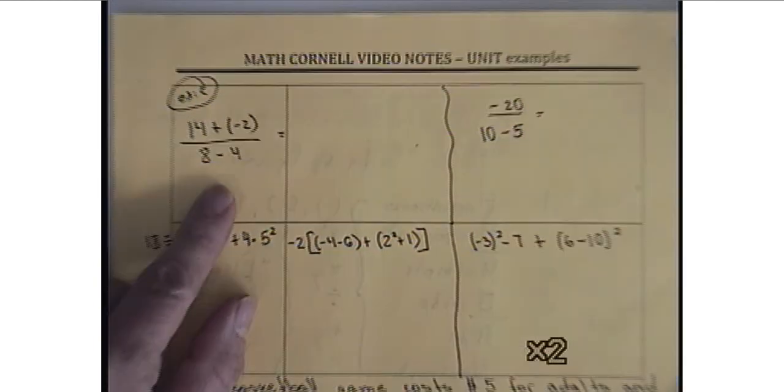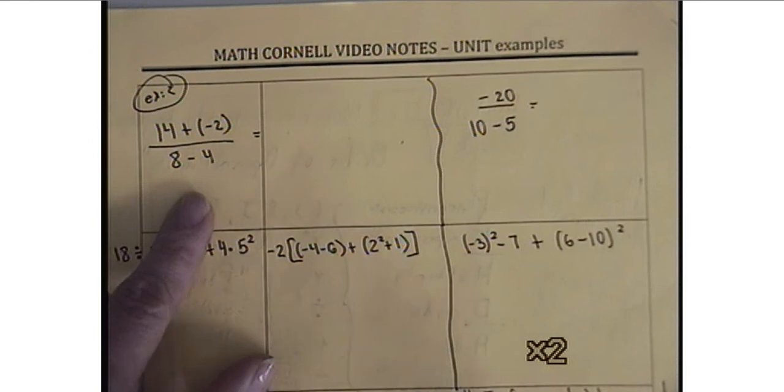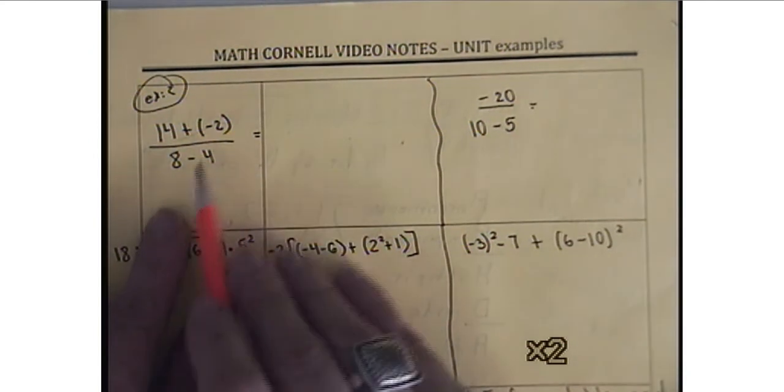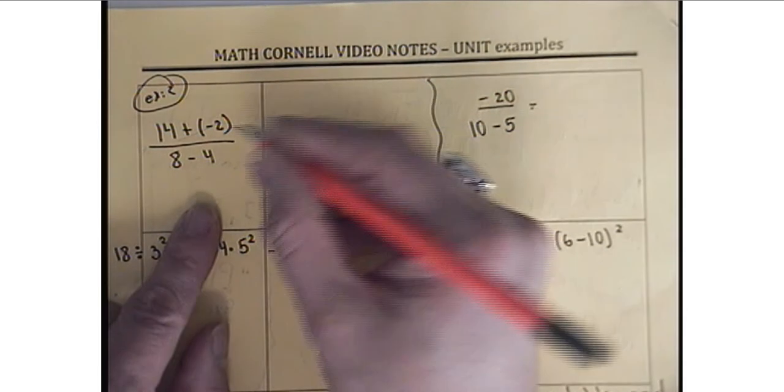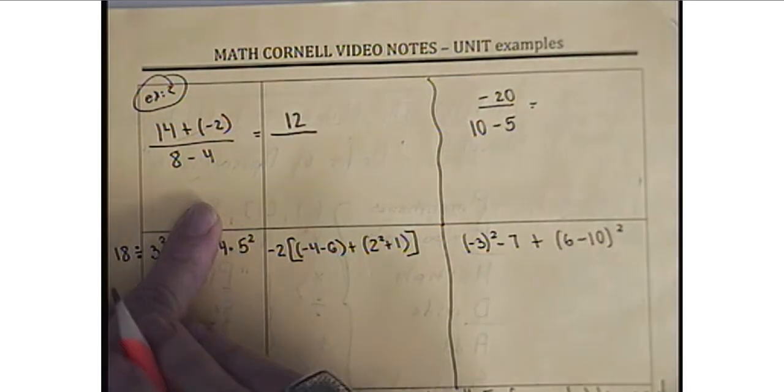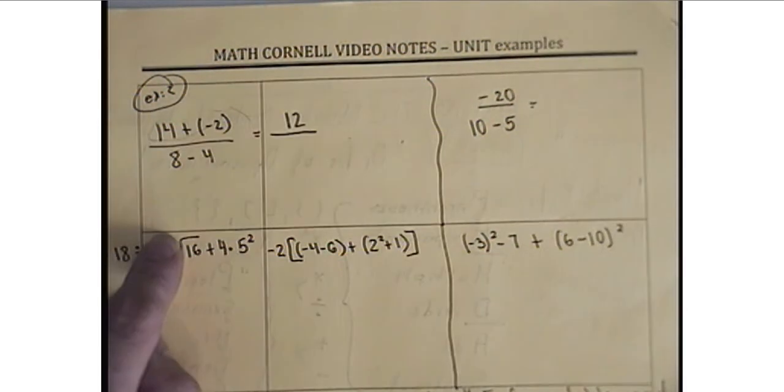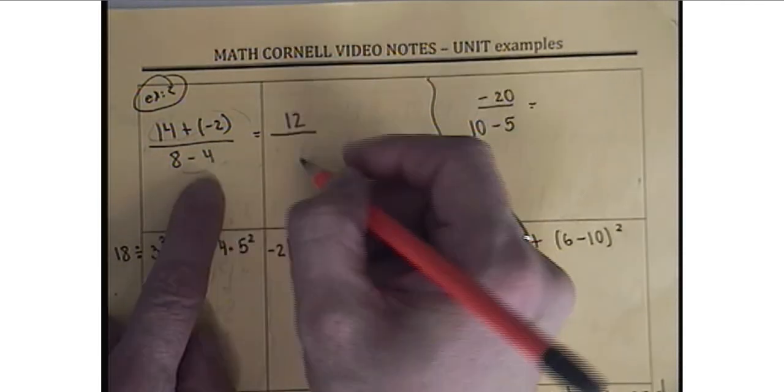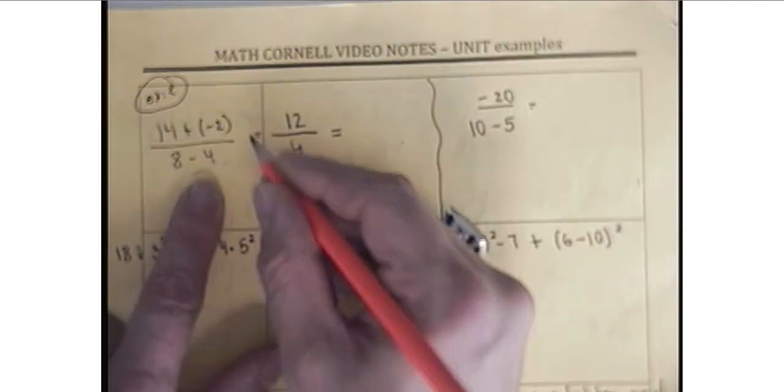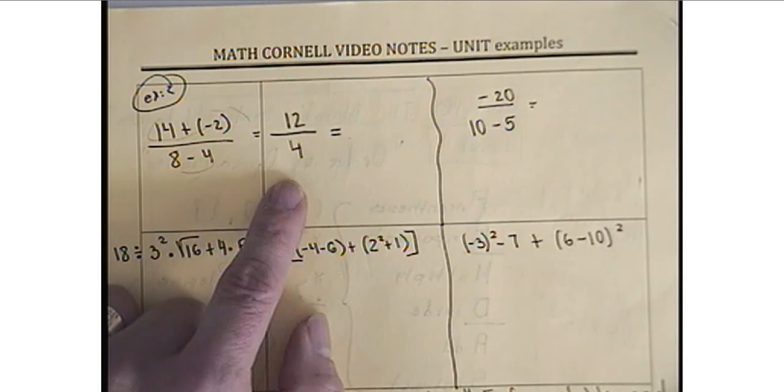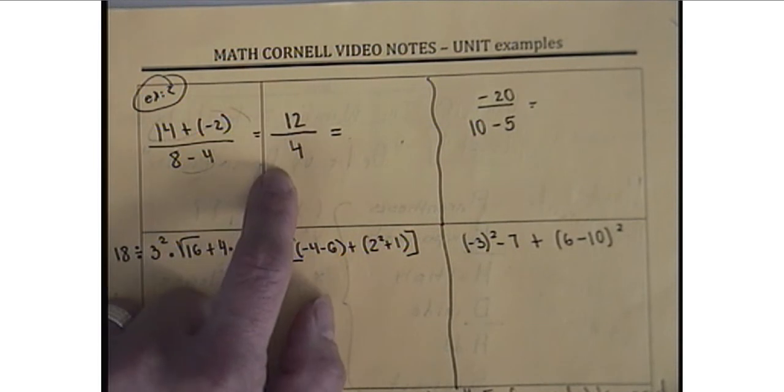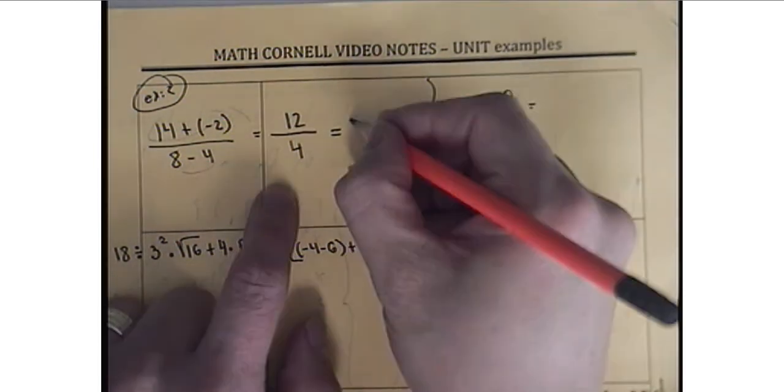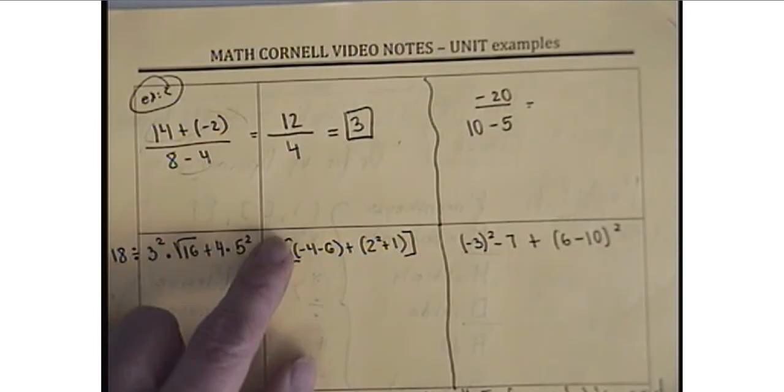We have one example 14 plus negative 2 over 8 minus 4. Well, 14 plus negative 2 is 12 on the top. So you calculate the top part first, then the bottom 8 minus 4 is 4. And once you calculate those and you have one number on the top and one on the bottom, you try to simplify if it's possible. So 12 divided by 4 or 12 over 4 will give you 3. And 3 will be the final answer here.